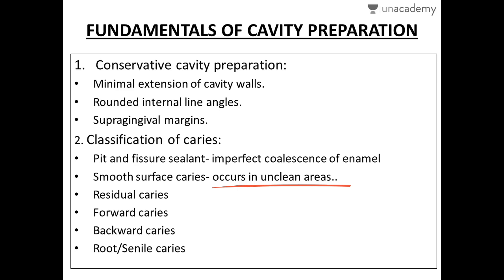This difference between pit and fissure caries and smooth surface caries is very important from an objective point of view. Next is residual caries — caries left behind after cavity preparation or restoration. It can be done intentionally in cases of indirect pulp capping, where affected dentine is kept under the restoration with medication so reparative dentine can form. It can also occur by the dentist's mistake when not all caries is removed.